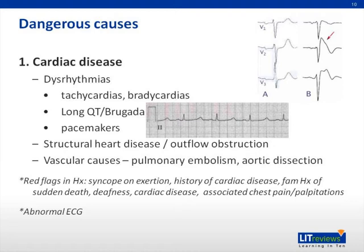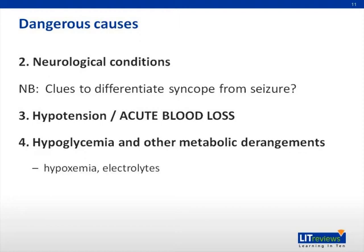Neurological causes of syncope rarely present as true syncope as they are often associated with lasting neurological deficits. However, they should still be considered as they are potentially life-threatening. Subarachnoid haemorrhage may present with loss of consciousness preceded by a severe headache — the worst in the patient's life — and may be followed by neurological deficits. Vertebral-basilar insufficiency can occur from acute occlusion such as a stroke, or from subclavian steal syndrome. It is usually associated with lasting deficits such as diplopia, vertigo, and nausea. The presence of peripheral neuropathy, especially in diabetic patients, may suggest coexisting autonomic neuropathy which can produce syncope due to orthostatic hypotension.